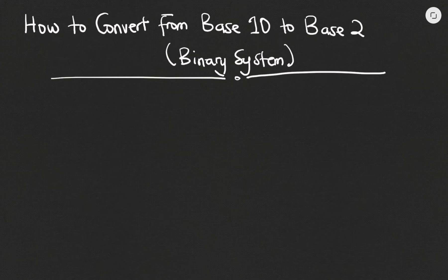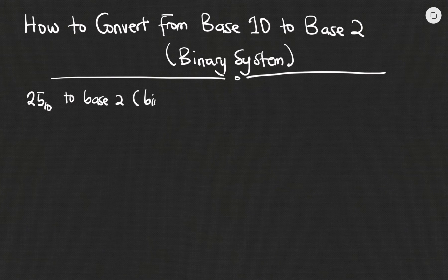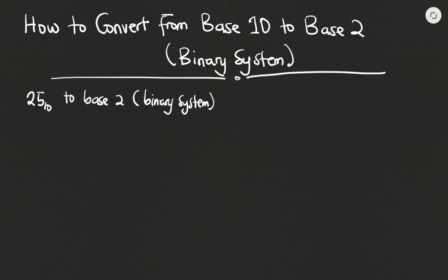Hello and welcome to my science tutorials. In today's video we want to learn how to convert from base 10 to base 2, which we also call the binary system or binary numbers. For base 2 it only has values ranging from 0 to 1, so you will not get anything above 1 when you are dealing with base 2.